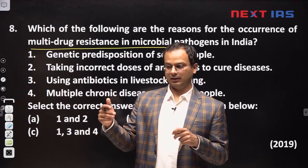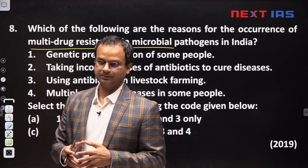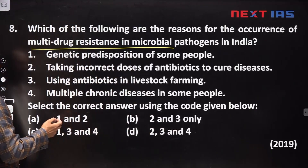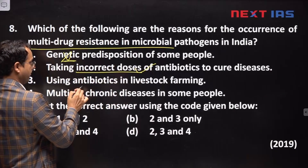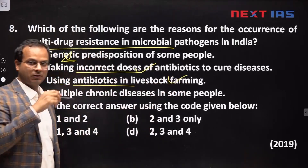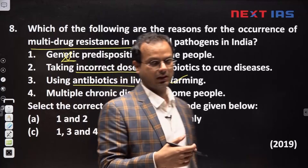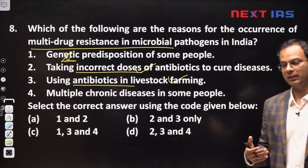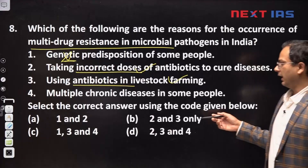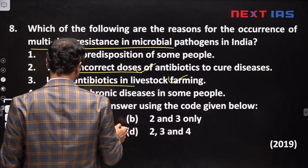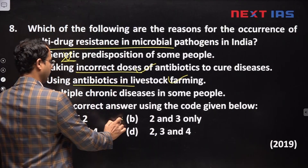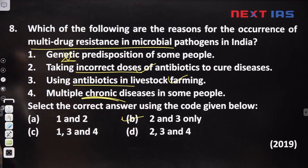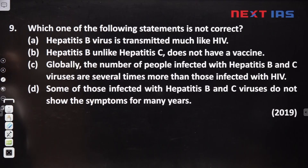This is how antibiotic resistance develops — bacteria slowly evolve. The causes include incorrect doses of antibiotics and using antibiotics in farming, where people give large amounts to cattle and poultry, leading to antibiotic-resistant bacteria in animals. Genetics and chronic diseases are not directly related. So options 2 and 3 are correct.